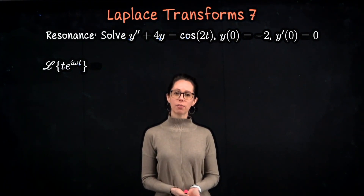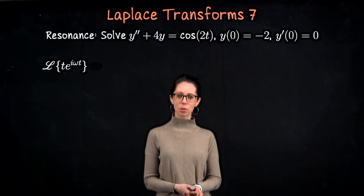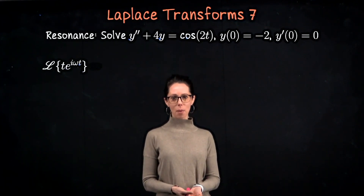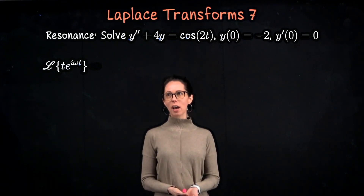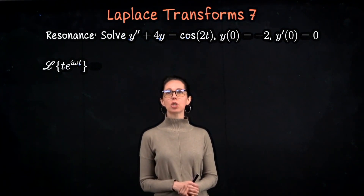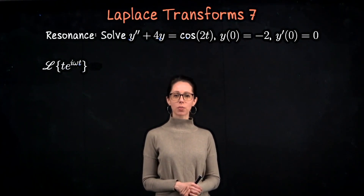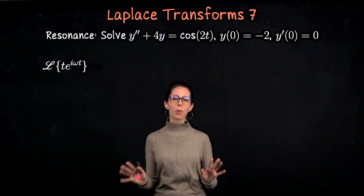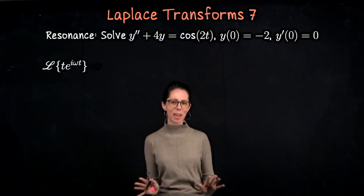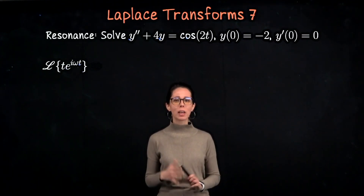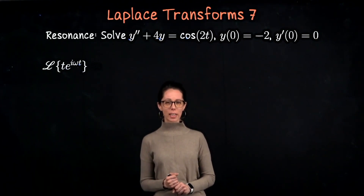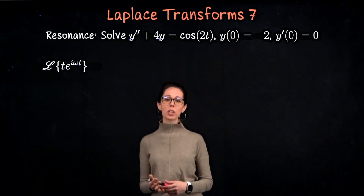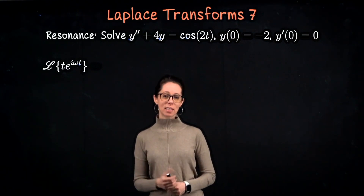Our forcing function cosine of two t on the right-hand side is reinforcing the natural harmonic motion of the solution to y double prime plus four y equals zero. The point is that resonance is happening, so let's see what we encounter when we start taking the Laplace transform of this differential equation.